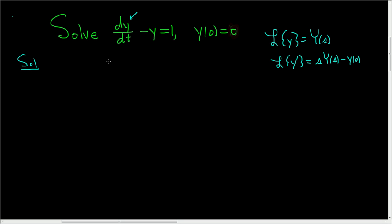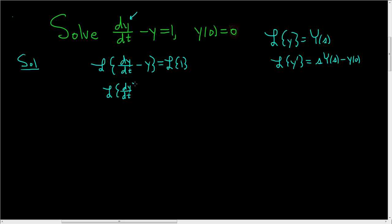Solution. The very first step is to take the Laplace transform of both sides. So we take the Laplace of dy/dt minus y, and that equals the Laplace of 1. Since the Laplace transform is linear, this equals the Laplace of dy/dt minus the Laplace of y. The Laplace of 1 is simply 1 over s — that one's pretty easy and most people have it memorized.